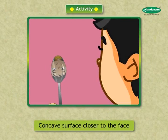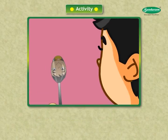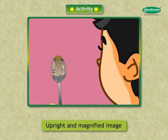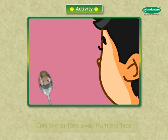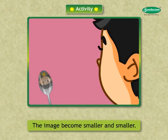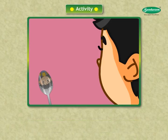Now take the spoon away from your face. What change do you observe in the image? The image becomes smaller and smaller. Now repeat the activity by turning the convex surface of the spoon to the front.